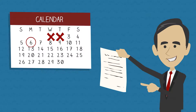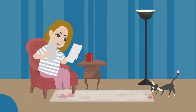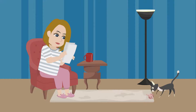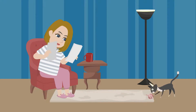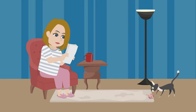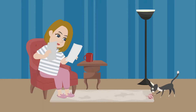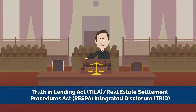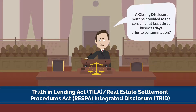Lenders are required by law to provide the closing disclosure to the consumer at least three days before closing. This requirement allows the consumer time to compare the final costs of their transaction with those previously provided on the lender's loan estimate and time to ask questions before the closing. This three-day rule was implemented in 2015 when the TILA-RESPA Integrated Disclosure Rule, known as TRID, went into effect. TRID rules dictate what information mortgage lenders need to provide and when they must deliver it.